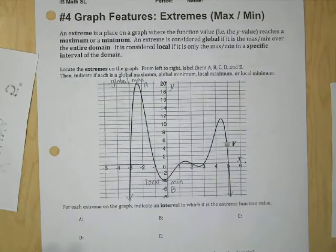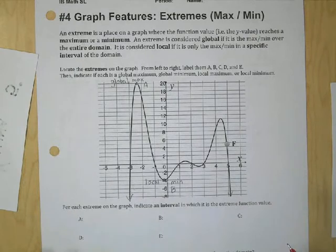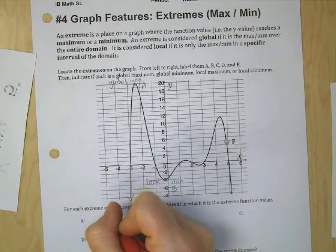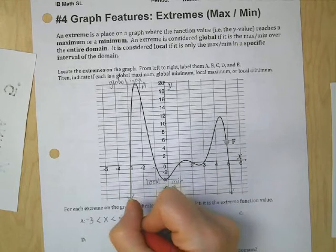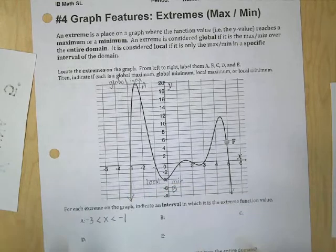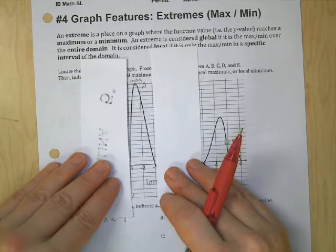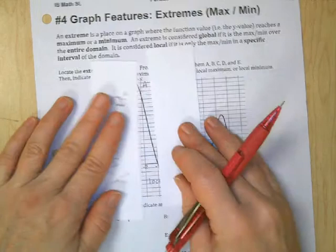Okay. So there's more than one answer. For all of these, there's more than one answer for how you can answer these. So for this one, I'm going to say x is between negative three and negative one. So for the interval on this graph from negative one to negative three, if I cut it off like this, a is the extreme value. Okay. So now I want to slide this over to b.